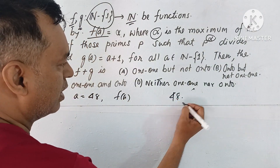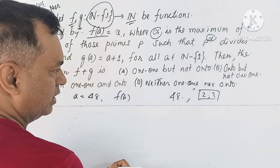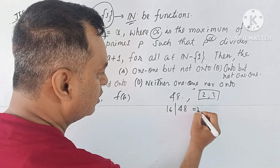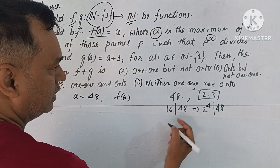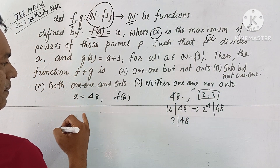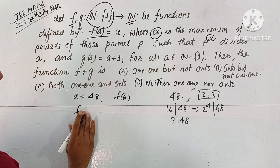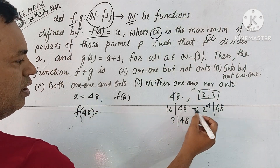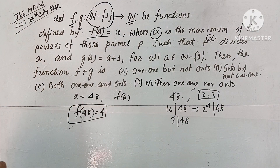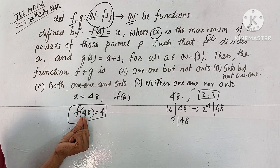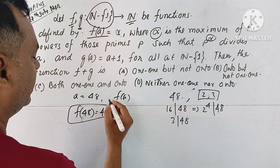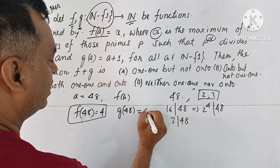The prime factorization of 48 gives primes 2 and 3. 2 cubed divides 48, 16 (which is 2 to the power 4) divides 48, meaning 2^4 divides 48. Also 3 divides 48 and 3 squared divides 48. So F(48) equals alpha, and the maximum of the powers is 4. Therefore F(48) = 4.